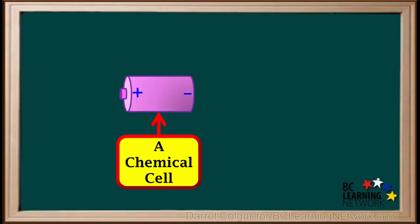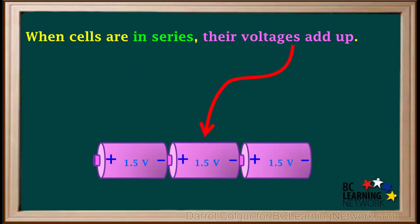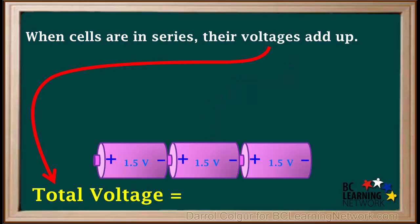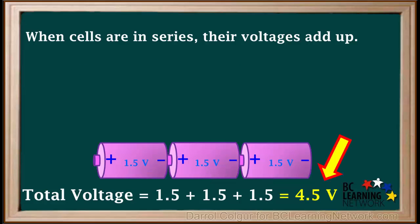To review: a single unit like this is called a chemical cell, rather than a battery. When cells are connected positive to negative, they form a battery of cells in series. When cells are connected in series, their voltages add up. So for example, the total voltage of three 1.5 volt cells in series is equal to 1.5 plus 1.5 plus 1.5, which is 4.5 volts.